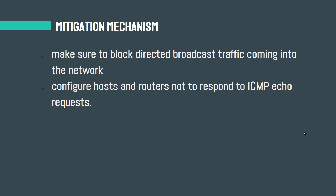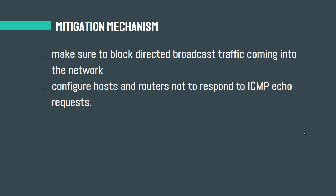The second solution: configure hosts and routers not to respond to ICMP echo requests. The Smurf attack starts with ICMP broadcasting packets, which is why for the mitigation mechanism it is better to block your routers from receiving broadcast traffic.